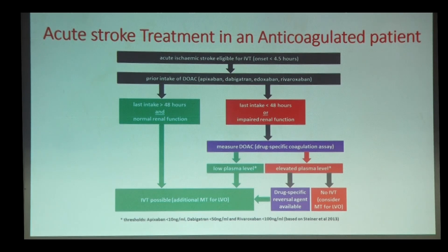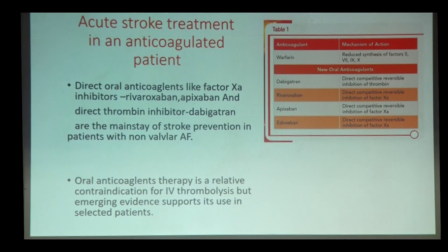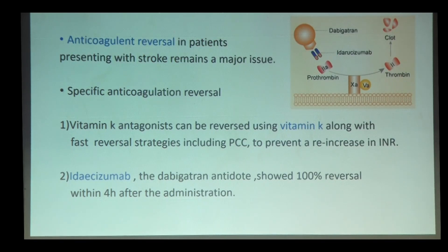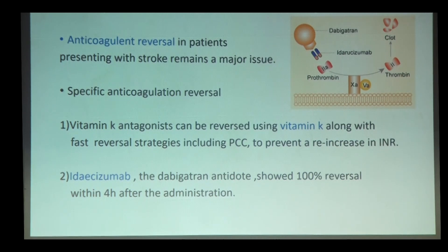The next update is regarding acute stroke treatment in anticoagulated patients. Direct oral anticoagulants like factor Xa inhibitors — rivaroxaban, apixaban — and direct thrombin inhibitors like dabigatran are the mainstay of stroke prevention in non-valvular atrial fibrillation. Oral anticoagulant therapy is a relative contraindication for IV thrombolysis, but emerging evidence supports its use in selected patients. Specific anticoagulation reversal for vitamin K antagonists can be achieved using vitamin K along with faster reversal strategies including PCCs. Idarucizumab, a dabigatran antidote, showed 100% reversal within 4 hours after administration.